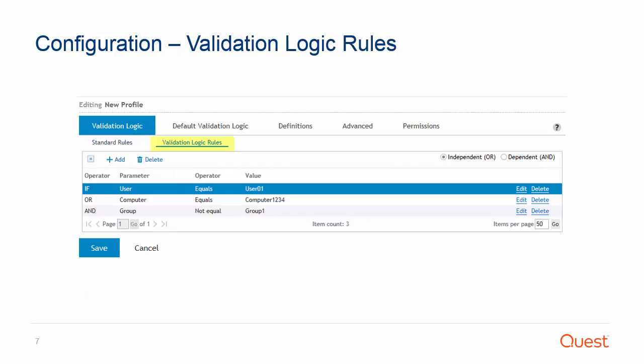When a more granular rule is needed, use the validation logic rules tab. In the validation logic rules tab, multiple validation logic rules can be added to the validation rules list. Validation logic creates a rule statement using operators and values that will be reduced to an eventual true or false answer. Boolean logic is used between each of the rules to tie each rule together. If, or, and, and not can be used to define a very specific rule. To get more in-depth information about the use of validation logic operators, view the hyperlinked article in the accompanying KB.